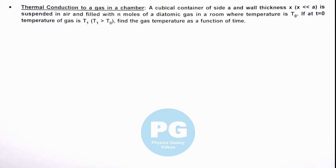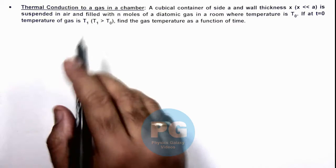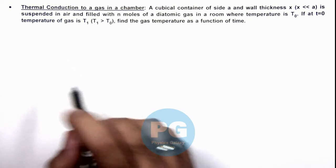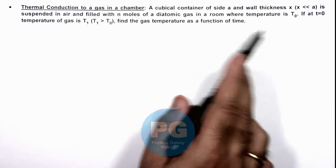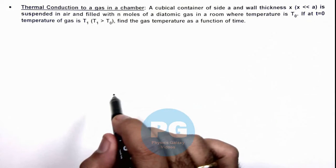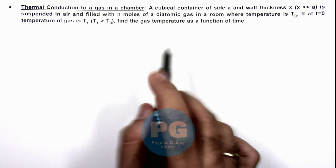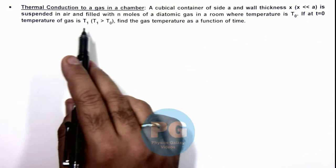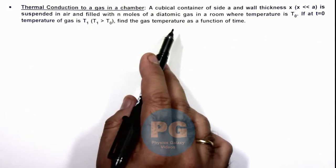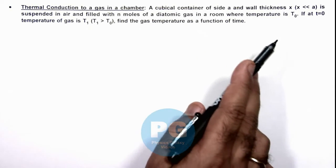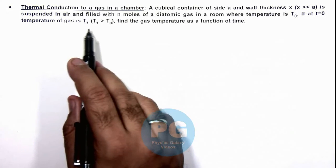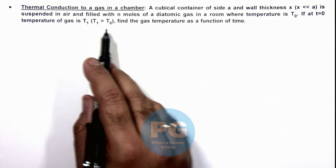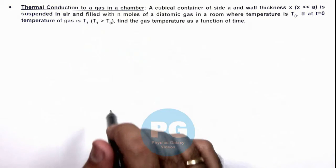In this illustration we'll analyze the thermal conduction to a gas in a chamber. We are given that a cubical container of side a, and wall thickness x which is very less compared to the edge of the cube, is suspended in air and filled with n moles of a diatomic gas in a room where temperature is T₀. Now if at t equal to zero temperature of gas is T₁ which is greater than T₀, we are required to find the gas temperature as a function of time.